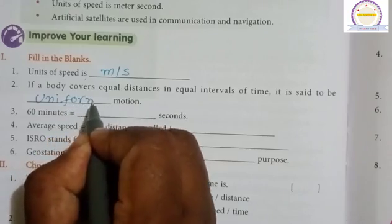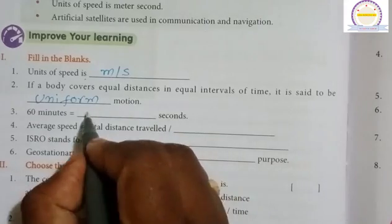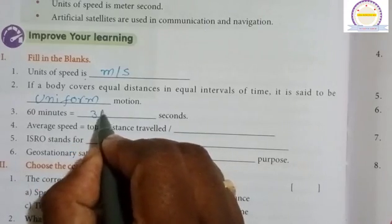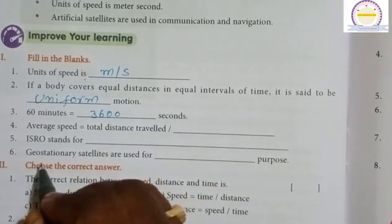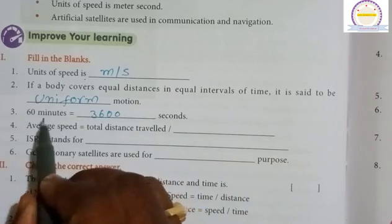60 minutes equals 3,600 seconds, because each minute has 60 seconds. That's why 60 minutes times 60 seconds equals 3,600 seconds.